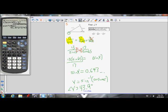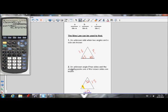And that's it. So you can use the sine law in two cases, remember, to find an unknown side when two angles and a side are known, and then to find an unknown angle if you know two sides and an angle opposite one of the sides. So those are the two instances you can use the sine law.